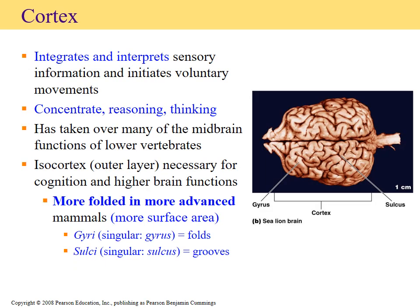The outer layer of the cerebellum is covered by the cortex. The cortex is the region where you're able to integrate and interpret a lot of the sensory information, and some of our voluntary movements will be initiated within this particular location. In lower vertebrates, the cortex has taken over a lot of the functions of the midbrain, whereas in higher-level vertebrates, it plays a role in concentration, reasoning, and thinking.